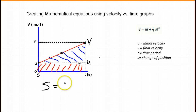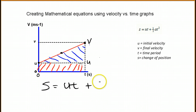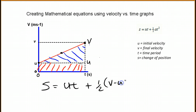S will be equal to two parts: the lower part, which is a rectangle — U times T — plus the upper part, which is one half of the height, which is V minus U, times T.